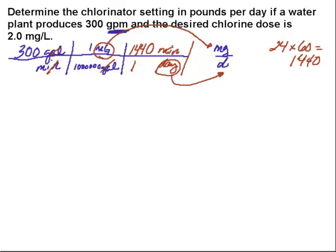So I'm going to plug that into my calculator. 300 times 1440 divided by a million, and make sure that you get those six zeros in there. I always like to punch this one in twice, and what I end up with is 0.432 million gallons per day for this plant.